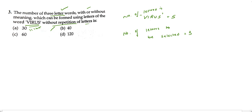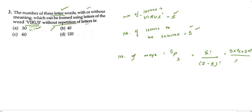Since we need to find the number of three-letter words, we will use permutation. Out of 5 letters we need to select 3, so this can be done in 5P3 ways, which is 5!/(5−3)! = 5 × 4 × 3 × 2! / 2! = 5 × 4 × 3 = 60. So there are 60 ways, and option C is our correct answer.